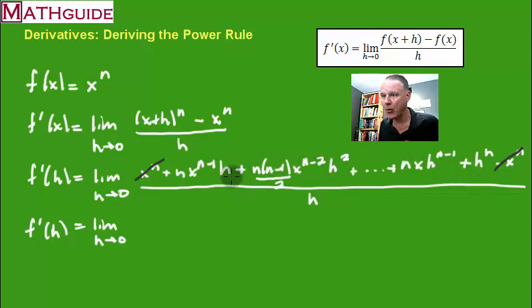And all the other powers are going to go down by one. So you're going to see this term, x to the n minus one, but the h's cancel. You're going to see this term, n times n minus one, all over two, x to the n minus two. You're going to get this one's going to be h, dot, dot, dot. And this one's going to have one less h in it.